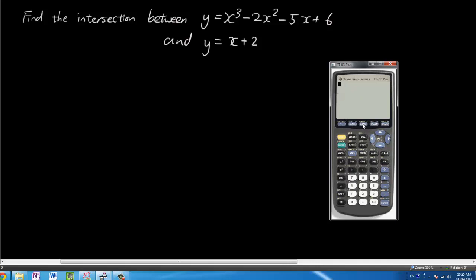So the first thing we're going to do is go to y equals, and you're going to draw both of these equations on the graphics calculator. So press x cubed minus 2x squared minus 5x and plus 6. So that's the first equation. And the second equation is x plus 2.